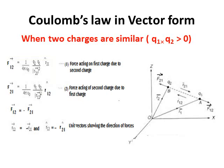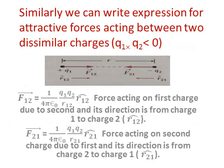Similarly, when the two charges are unlike, that means the product of the charges q1 and q2 will be less than zero, and there will be Coulombic attractive force as shown in the figure.